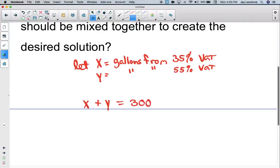Now my next equation is going to be all about the gallons of acid. If there's X gallons from the vat with 35% acid, to get the gallons of acid, I'm going to do 0.35 times X. And then I'm going to take the 55% and multiply that by Y.